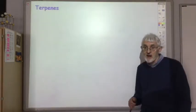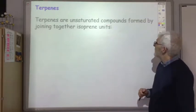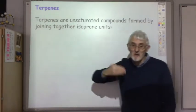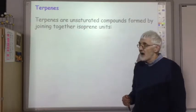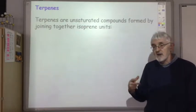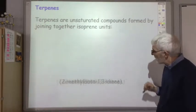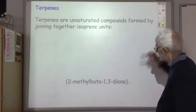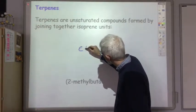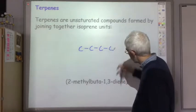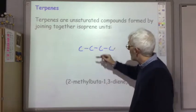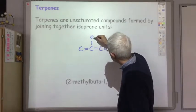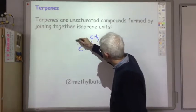So what are terpenes? They're unsaturated compounds formed by joining together isoprene units. Notice the word 'ene', like alkenes, telling you it's unsaturated. What's an isoprene unit? Well, the proper name for an isoprene unit is 2-methylbuta-1,3-diene. So four carbons, with double bonds at the 1 and 3 positions, and then a methyl group on the second carbon. That's your isoprene unit.